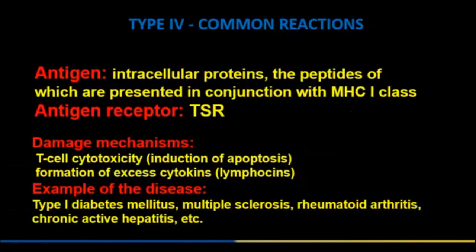Type IV — delayed hypersensitivity: the antigen is intracellular proteins whose peptides are presented in conjunction with MHC class I molecules. The damage mechanism involves T-cell cytotoxicity, induction of apoptosis, and formation of excess cytokines and lymphokines.